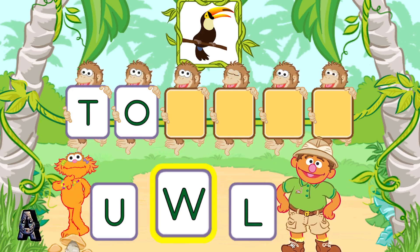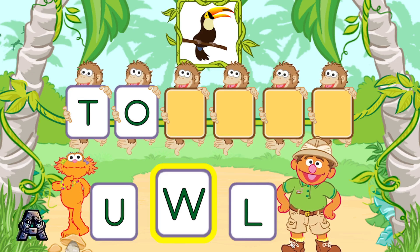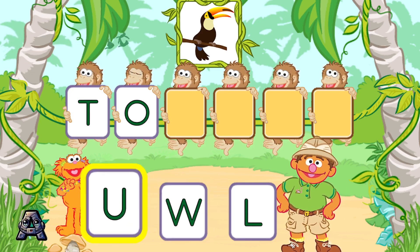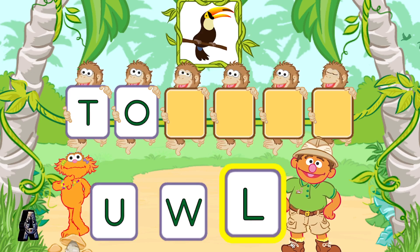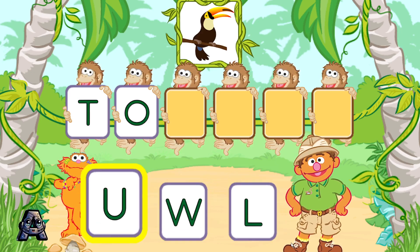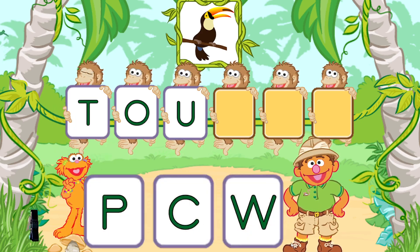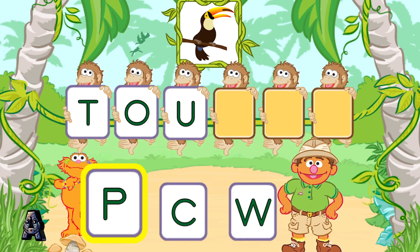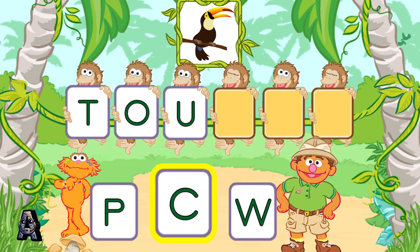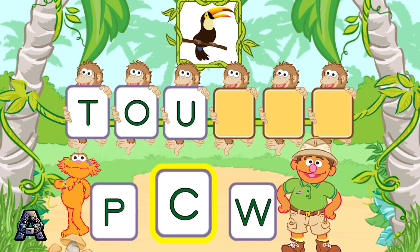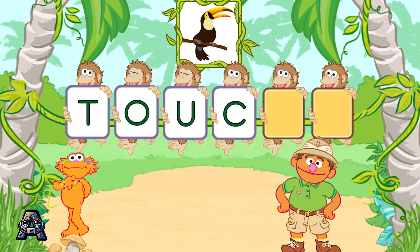W is not the next letter in the word toucan. Give it another try. Pick the letter U. Remember, pick the letter U. Nice job! U is the next letter in the word toucan. Next, pick the letter C. Well done! C is the next letter in the word toucan.